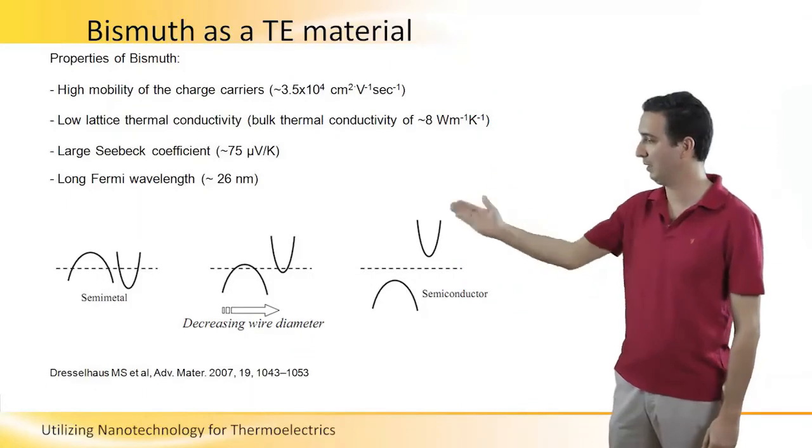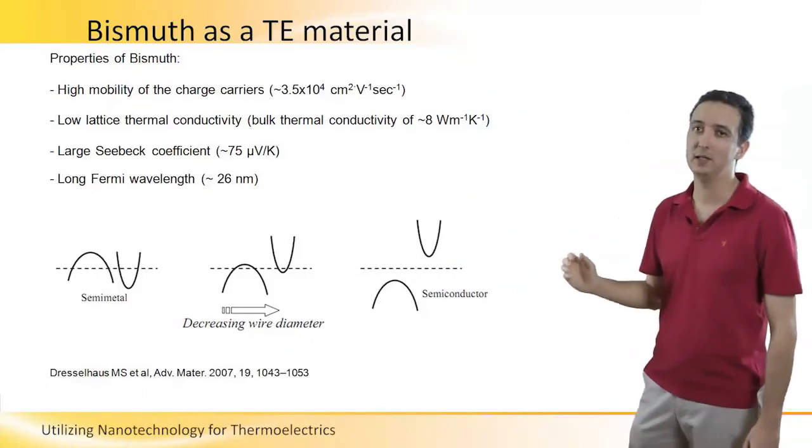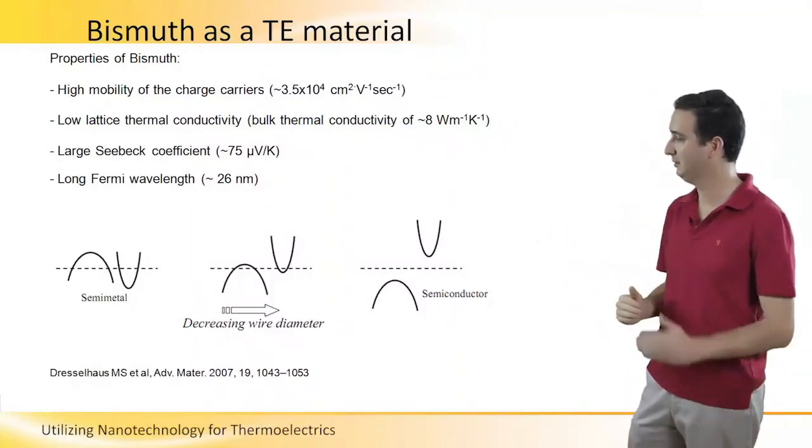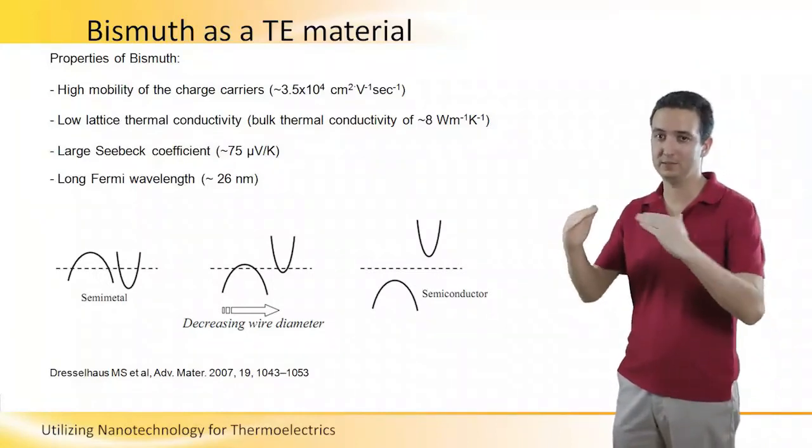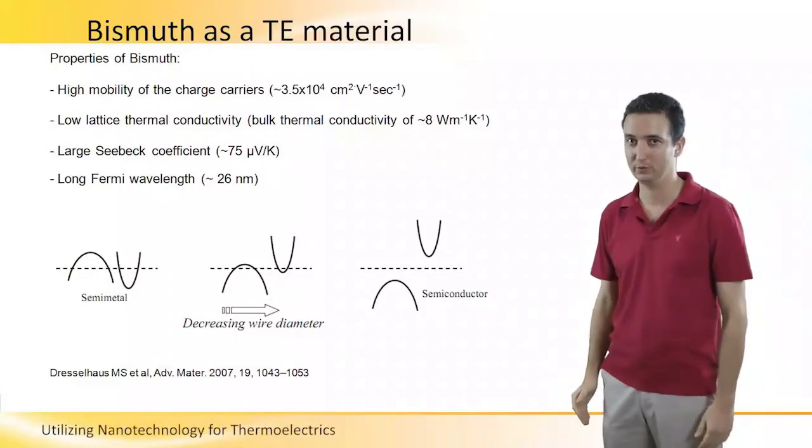Bismuth in its bulk structure is a semi-metal. And once you lower its dimension towards the nanometric level, the valence and conduction bands start to separate and you get a semiconductor eventually at a certain point.